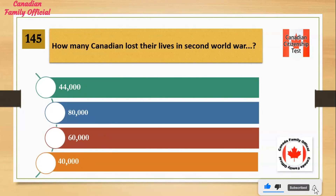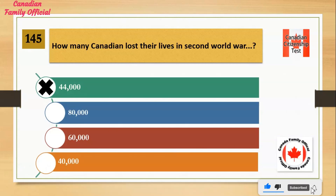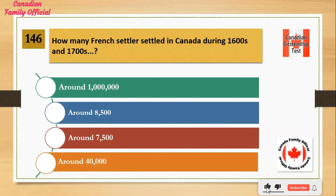How many Canadians lost their lives in the Second World War? Number 1: 44,000. Number 2: 80,000. Number 3: 60,000. Number 4: 40,000. And the answer is 44,000.